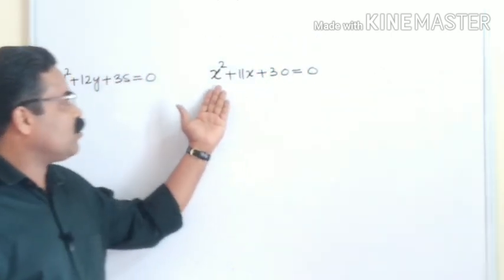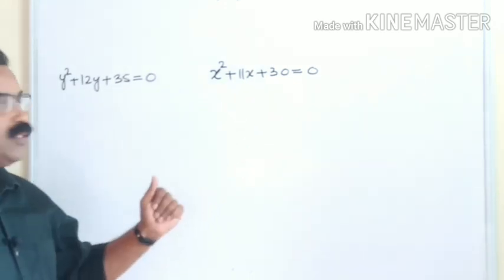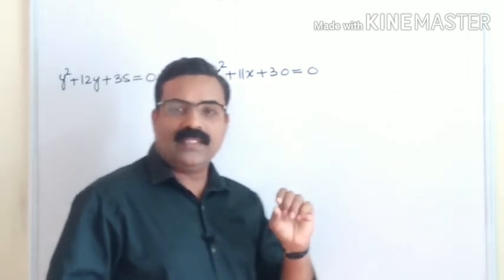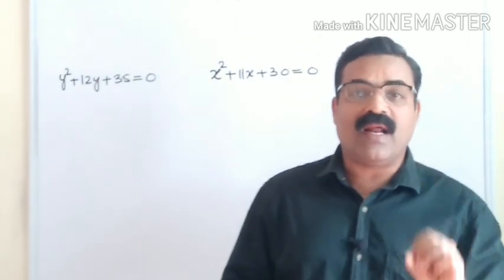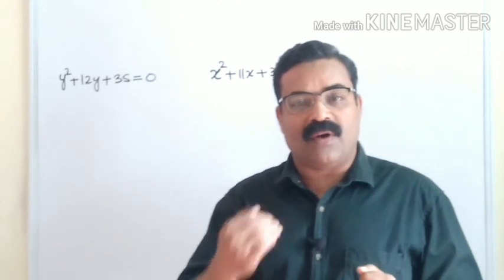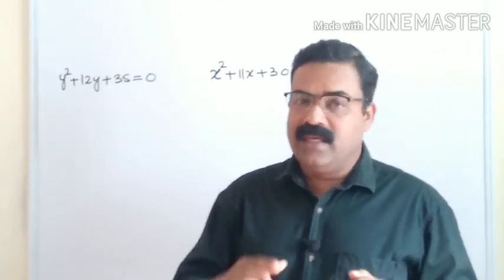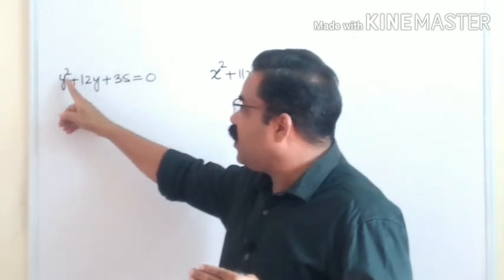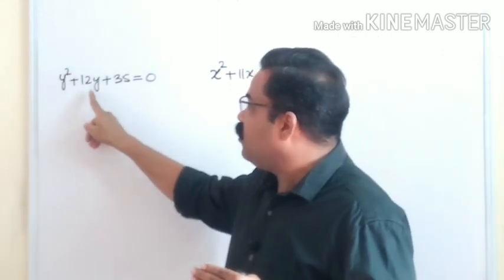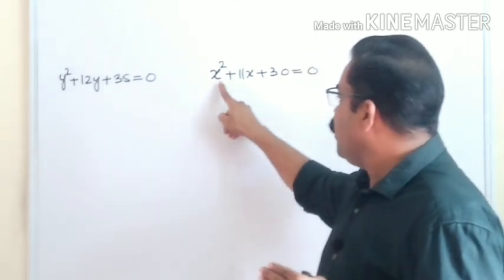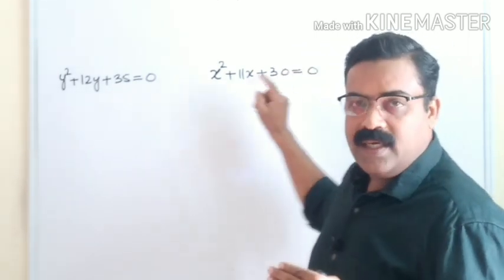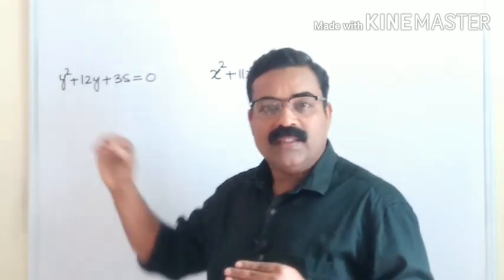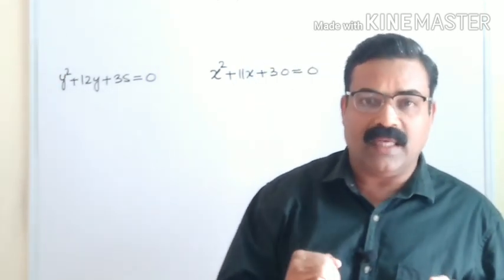We have some equations on the board: x² + 11x + 30 = 0 and y² + 12y + 35 = 0. These are examples of quadratic equations. How do you understand whether it is a quadratic equation or a linear equation? If the degree of the unknown quantity — like y², y, and a constant, or x², x, and a constant — is maximum 2, such equations are called quadratic equations.